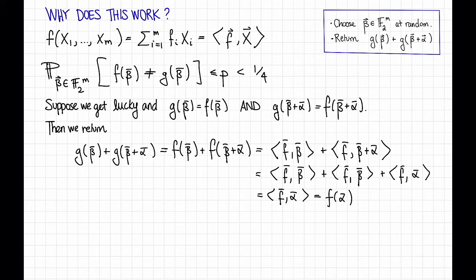And we're left with the inner product of f and α, also known as f(α). So if we got lucky and these two things occurred, then indeed what we return is what we wanted to return, which is f(α).